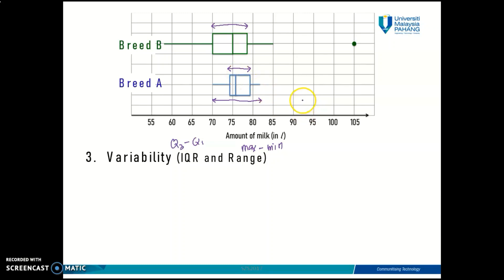By looking at the boxplot here, you can easily determine that breed A is more consistent than breed B because the IQR of breed A is much smaller compared to the IQR of breed B.